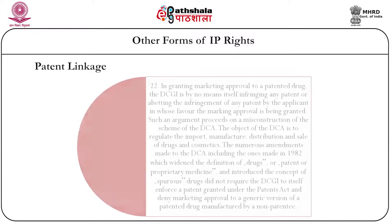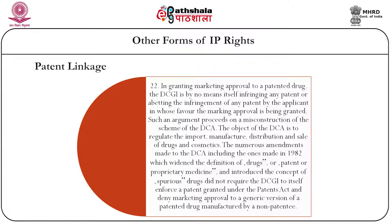The court further stated in paragraph 22 that in granting marketing approval to a patented drug, the DCGI is by no means itself infringing any patent or abetting infringement by the applicant. The object of the DCA is to regulate the import, manufacture, distribution, and sale of drugs and cosmetics. The numerous amendments to the DCA, including the 1982 amendment which widened the definition of drugs and introduced the concept of spurious drugs, did not require the DCGI to enforce patent rights under the Patents Act and deny marketing approval to generic versions of patented drugs.